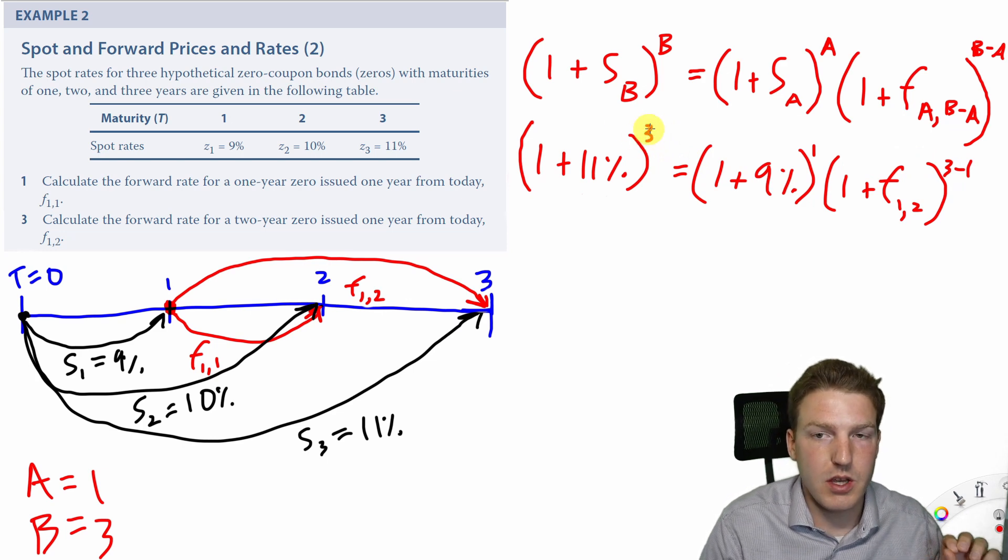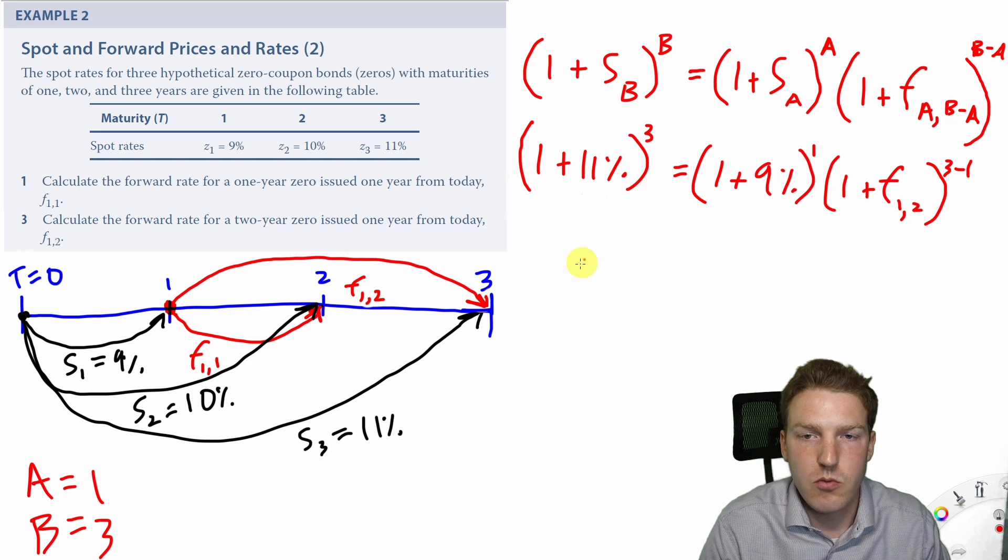And just like I said before, we want the left side, the sum of the exponents on the left side, equal to the sum of the exponents on the right side. And we have that here.